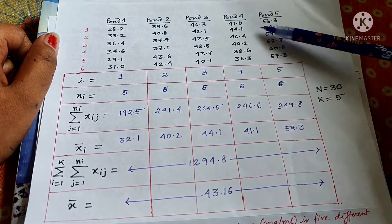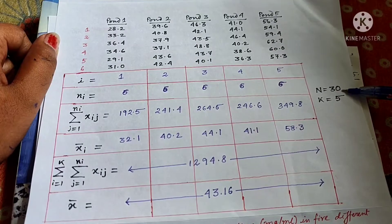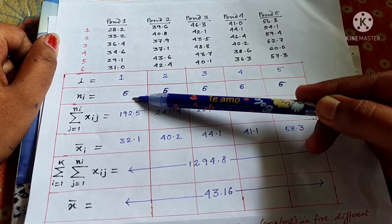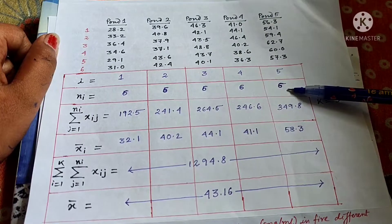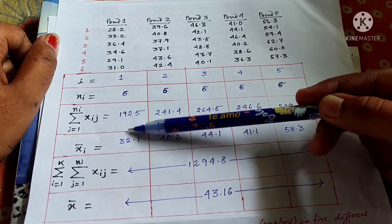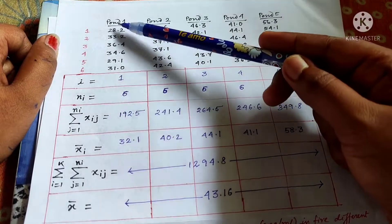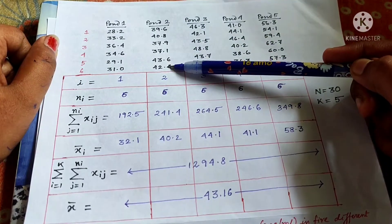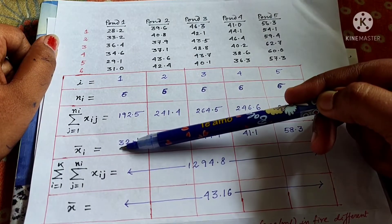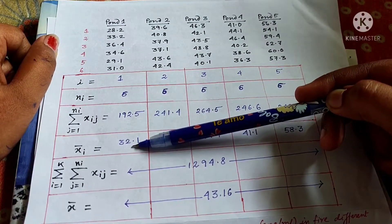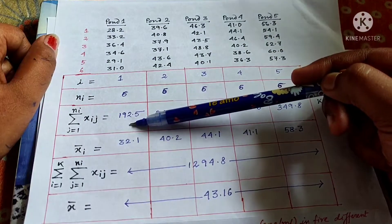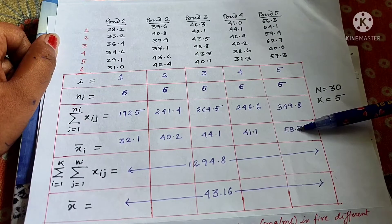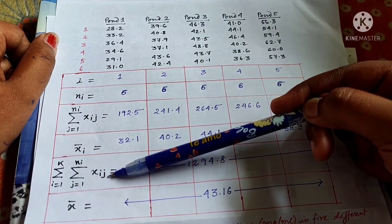There are five groups, k equals 5, and each group has six samples, so N equals 30. i indicates the number of groups — one through five — and ni is the number of samples in each group, which is six for every group. The summation of xij is the sum of strontium concentration in each group. Add up all values for each pond and record them. xi-bar is the mean strontium concentration in each pond — sum the values and divide by six.